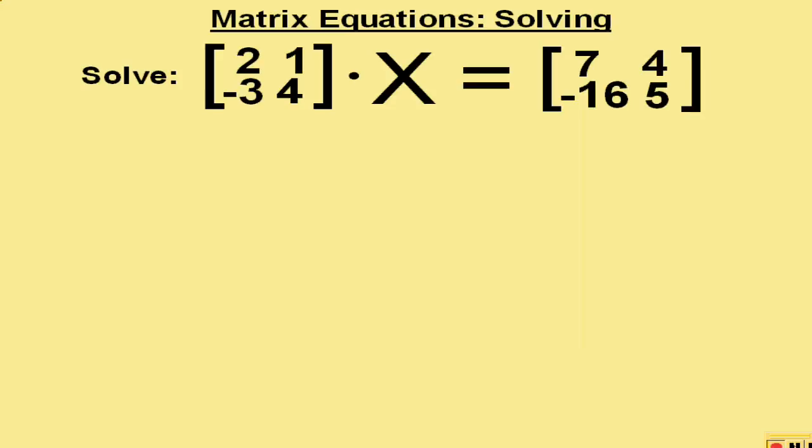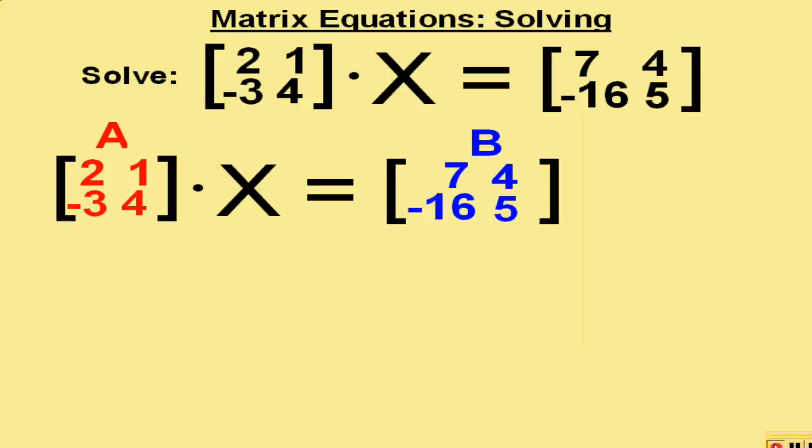The first thing we will do is name the matrices in the problem. The matrix on the left will be called matrix A, and the matrix on the right will be called matrix B. To get the answer to the problem, we will simply find the inverse of matrix A and multiply it by matrix B.